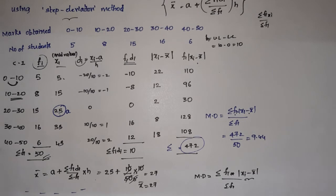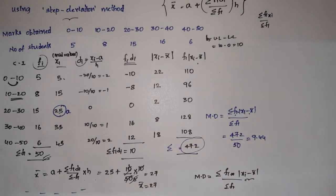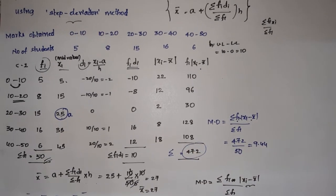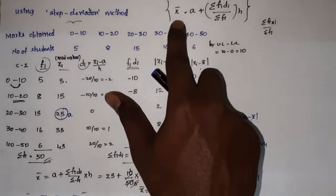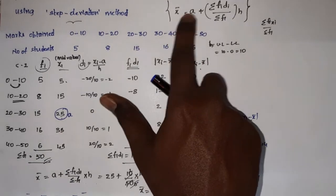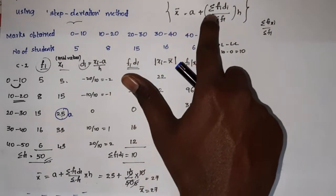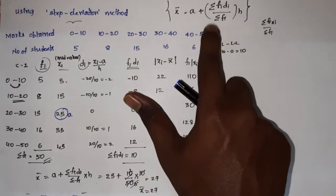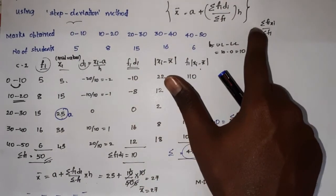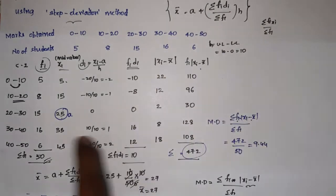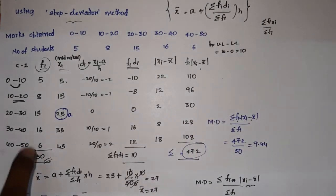Mean deviation using step deviation method: x̄ = A + (Σfi·di / Σfi) × h. We first find the mean using step deviation, then compute the mean deviation using the same |xi − x̄| approach.